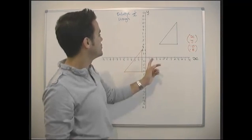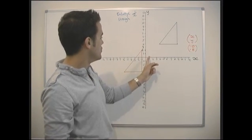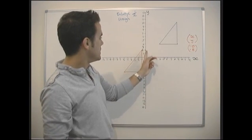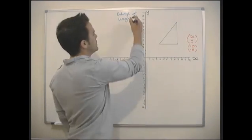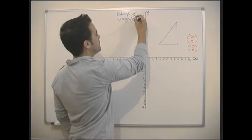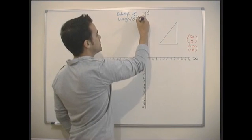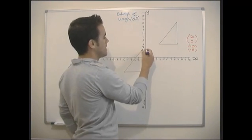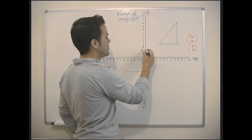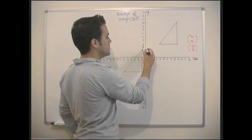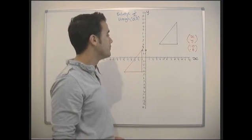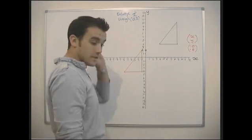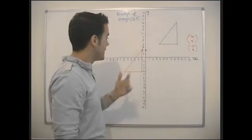We might be asked to enlarge the triangle by a scale factor of a half through the point (0, 2). So (0, 2) is our point of enlargement, right there. It's actually fairly straightforward — we look at each of the three points.